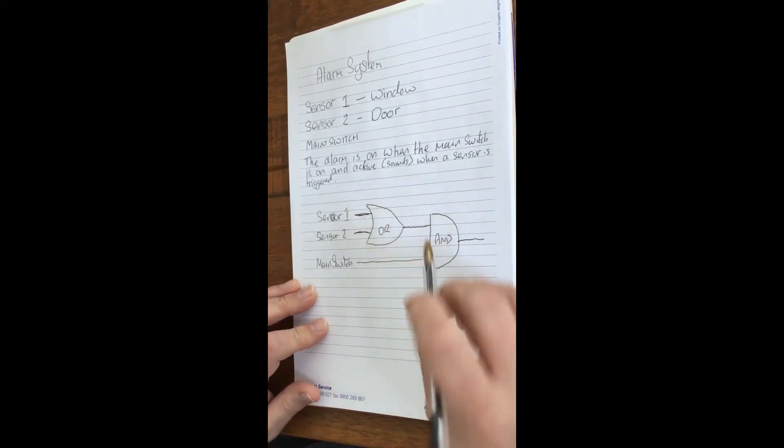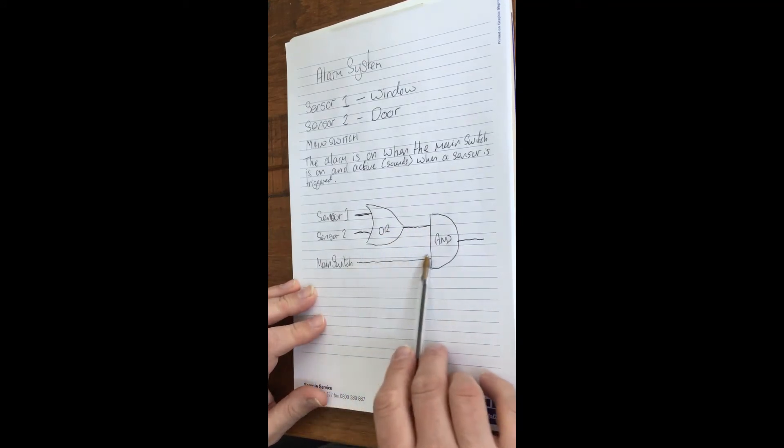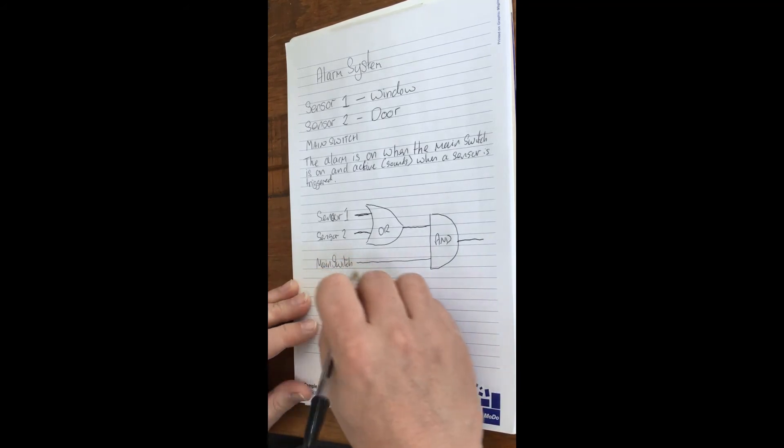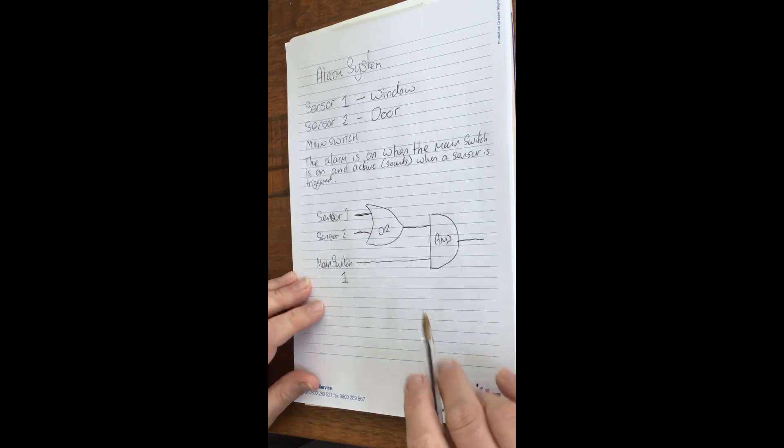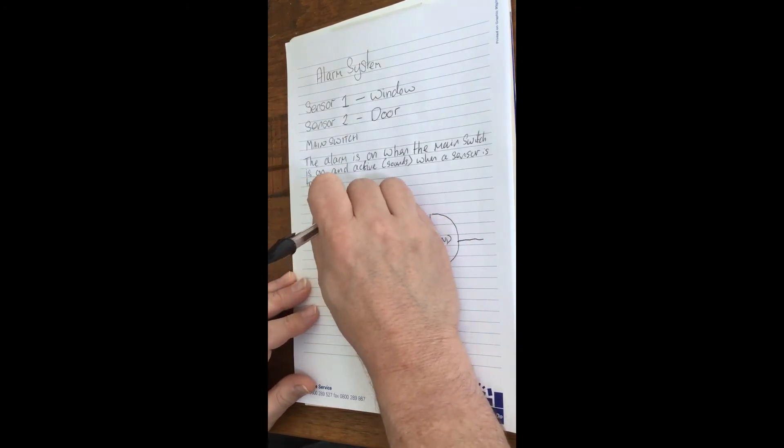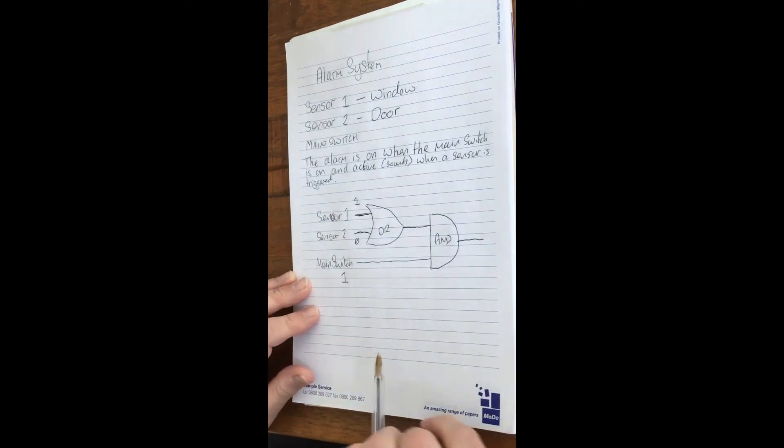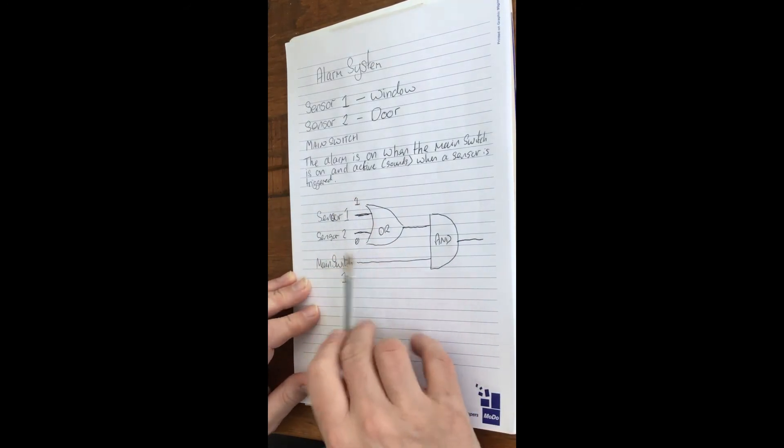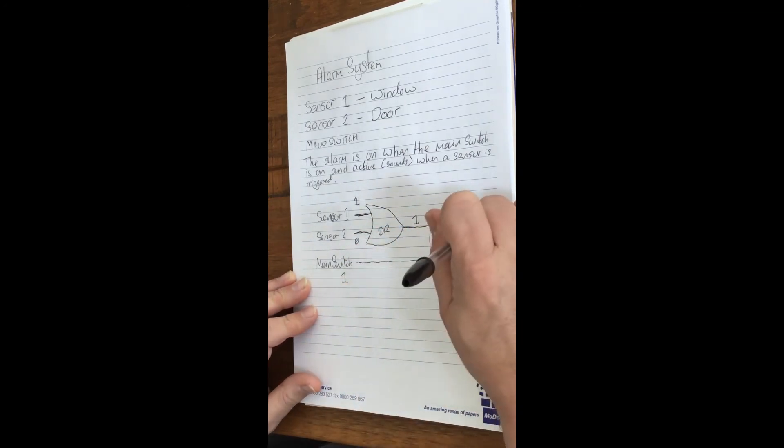The output from this OR gate goes into the AND gate along with the main switch. So if the main switch is on, sensor one is a one, and sensor two is a zero, then one or zero is one, and the main switch is one, so the output will be one and the alarm will sound.